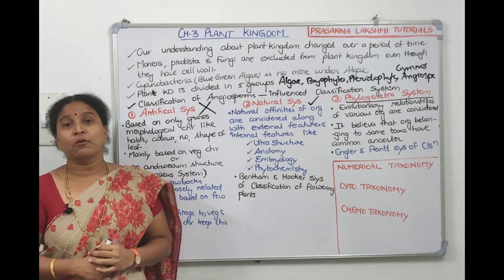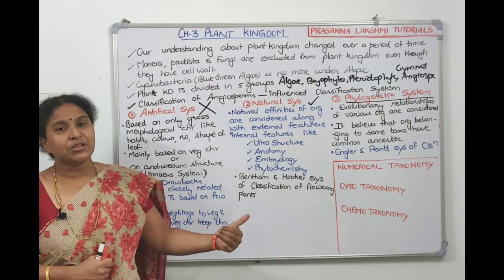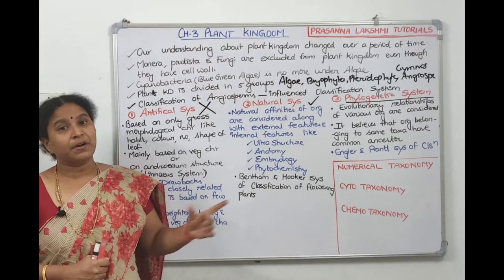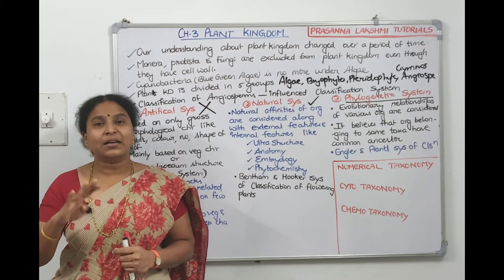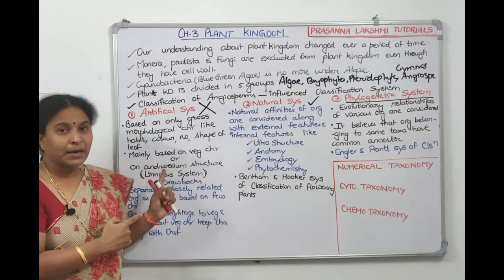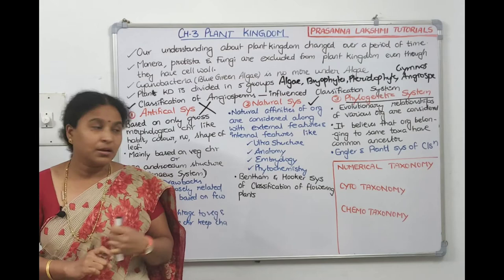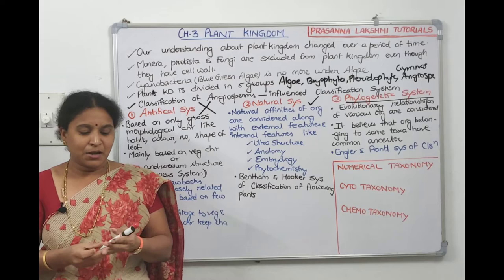Sometimes taxonomy is also used for classification. Numerical taxonomy uses computers to do classification — characters are coded numerically (root=1, stem=2, leaf=3, flower=4) and fed into a computer program. Since computers can read many characters, this is an advantage over artificial classification. However, in numerical taxonomy, equal weightage is still given to vegetative and reproductive characters.